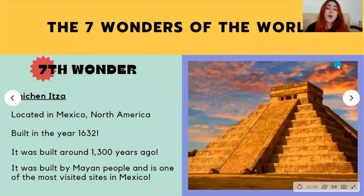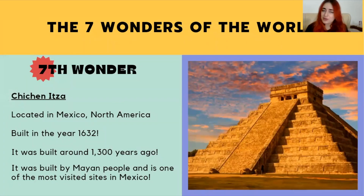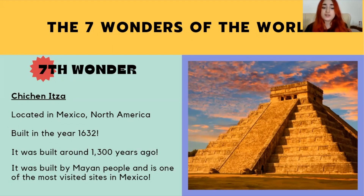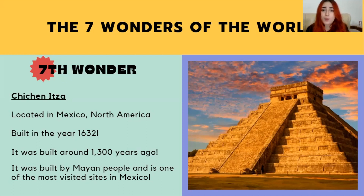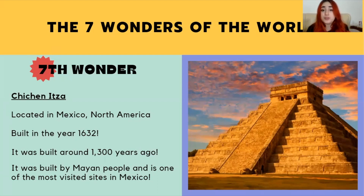Next up, we have the seventh and last wonder, Chichen Itza, located in Mexico in the North American continent. It was built almost 1300 years ago by the Mayan people and is one of the most visited sites in Mexico. The Mayan people are also known for inventing their own calendar, known as the Mayan calendar. Chichen Itza was also considered one of the biggest trading hubs in Mexico due to its central location.